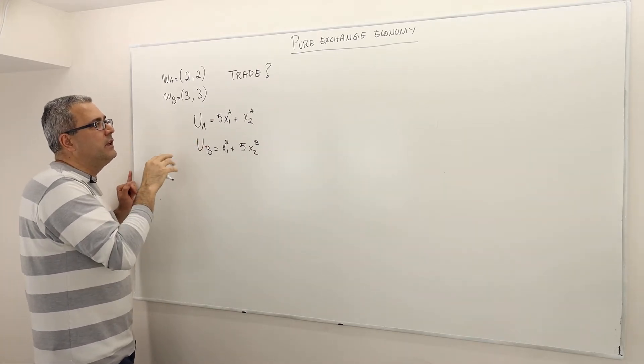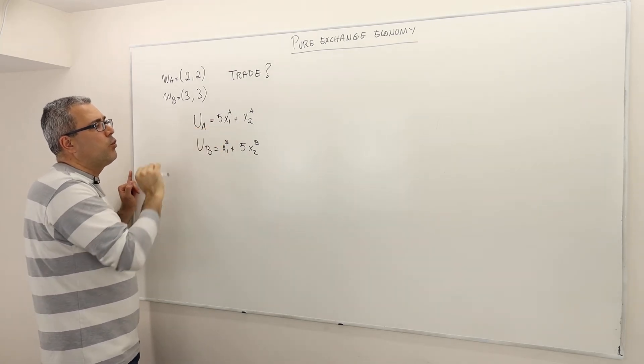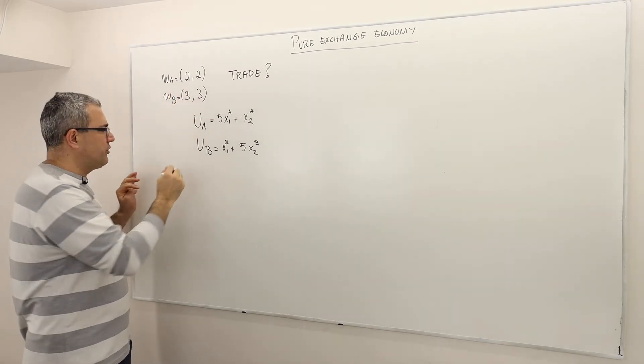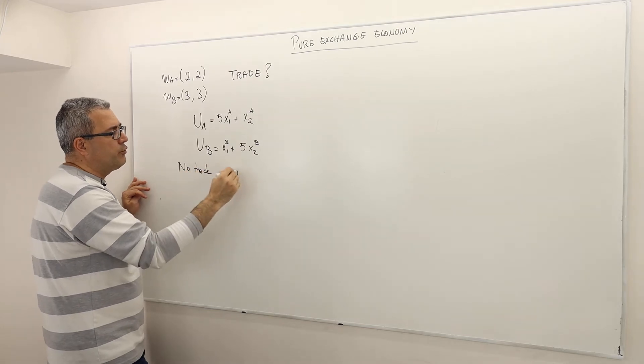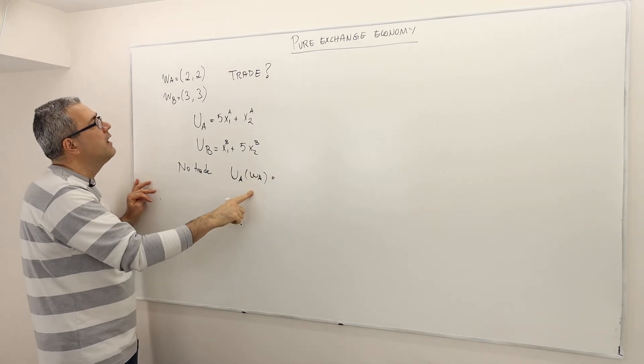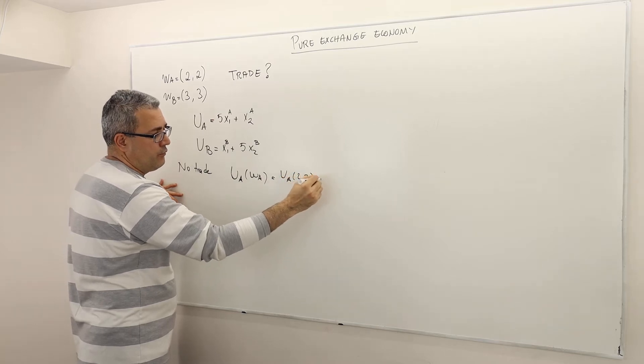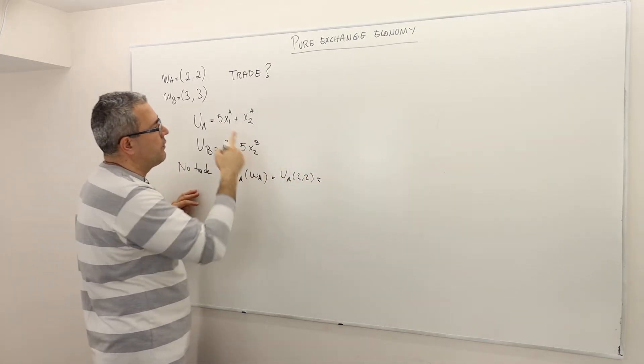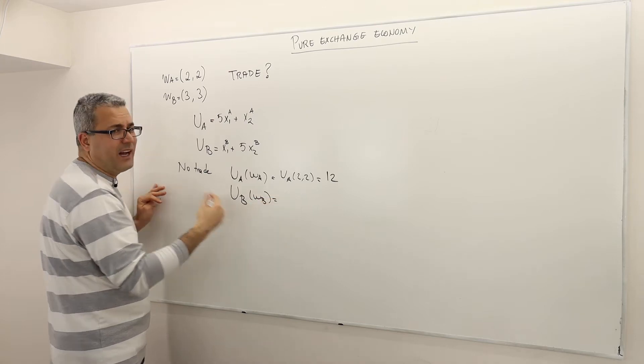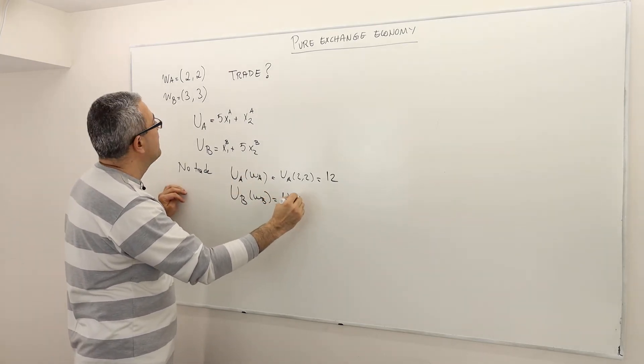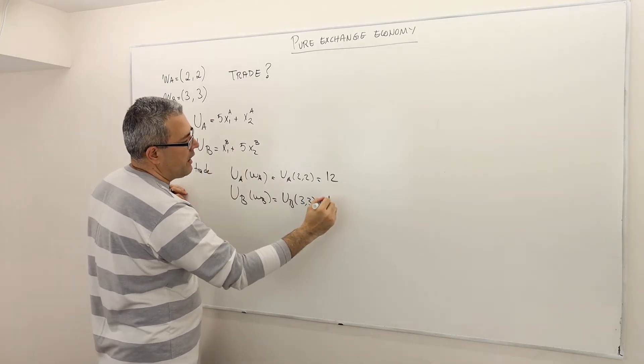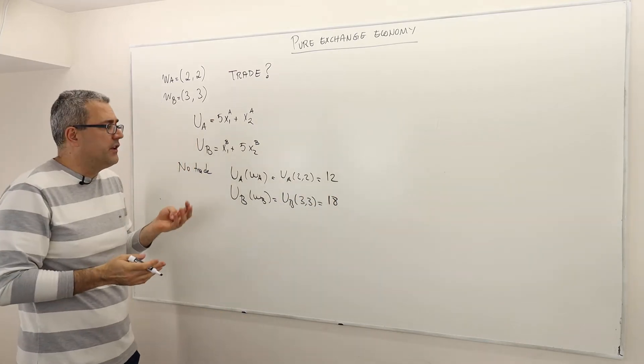So here, once again, look at the intuition. This guy A cares more about good one, and this guy cares more about good two. So if they do not make any trade at all, what is going to be their utility? The utility of agent A when he consumes his initial endowment (2,2) is 10 plus 2, which is 12. However, utility of agent B (3,3) is 3 plus 15, which is 18 units. Agent B is happier than agent A, but so what?